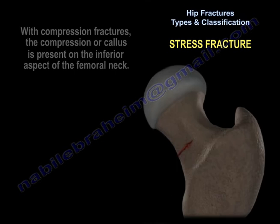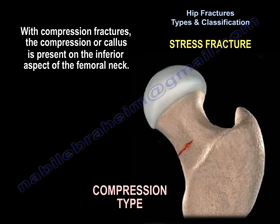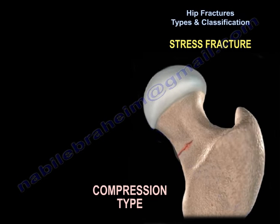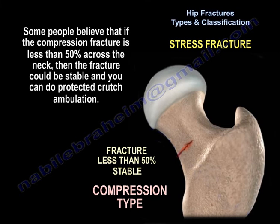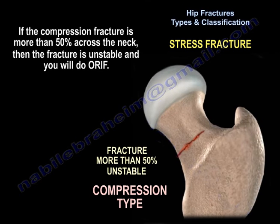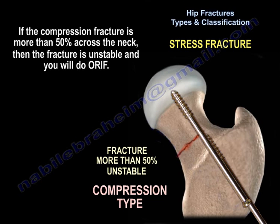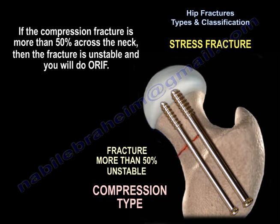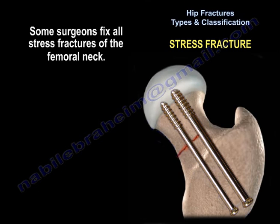In compression fractures, the fracture or callus is present on the inferior aspect of the femoral neck. Some believe that if the compression fracture is less than 50% across the neck, it could be stable and protected crutch ambulation is appropriate. If the compression fracture is more than 50% across the neck, the fracture is unstable and ORIF is indicated. Some surgeons fix all stress fractures of the femoral neck.